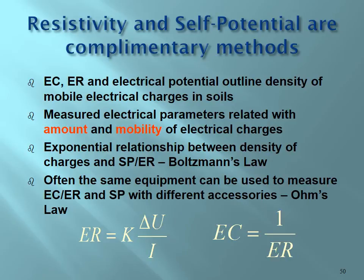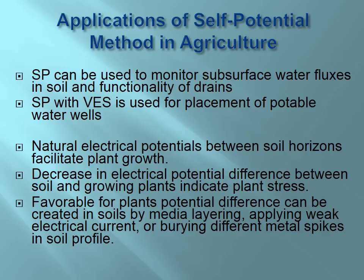In conclusion, resistivity and self-potential are complementary methods — both outline the density of mobile electrical charges in soil. Electrical parameters relate to the amount and mobility of electrical charges with an exponential relationship. Often the same equipment can measure EC, resistivity, and self-potential with different accessories and electrodes. According to Ohm's law, resistivity is directly proportional to potential, and EC is the inverse of resistivity. Self-potential in agriculture can be applied to monitor subsurface water fluxes, functionality of drains, and to find locations for potable water wells. Natural electrical potential between soil and plants can indicate plant stress.